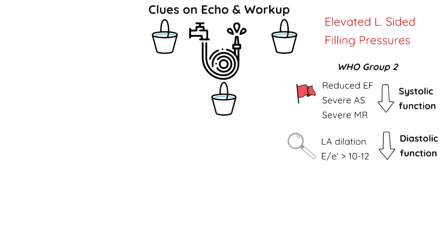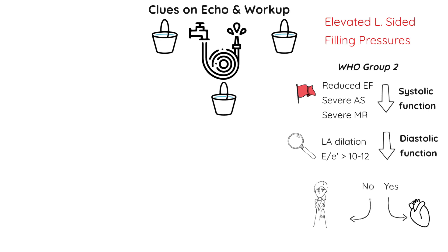In simple terms, the E to E' ratio essentially measures how hard it is for the left atrium to fill the left ventricle — the higher the ratio, the more worried we are about diastolic dysfunction. If elevated left-sided filling pressures are the culprit, treat the underlying heart disease and re-evaluate pulmonary pressures once addressed. And if you've ruled out a problem with the nozzle, you can start looking for kinks in the hose — increased resistance or causes of high flow.